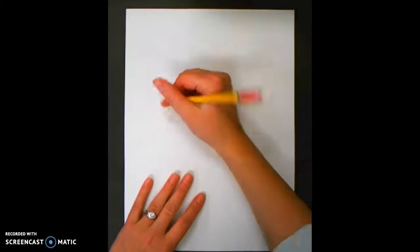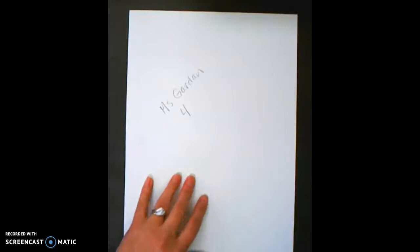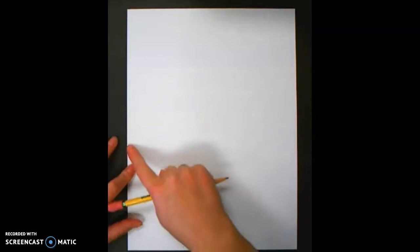So the first thing we need to do, as always, is write our name and our teacher code. So I'm writing my name, you would write your name, and then your teacher code, which would be four and then your teacher's initial for their name. Then flip it over. I'm holding my paper portrait style, which means long ways up and down vertically, and we are going to start today by making the branches of our tree that our bird will be sitting on.